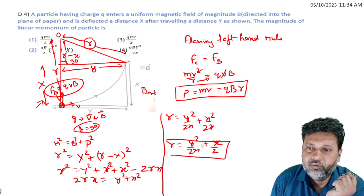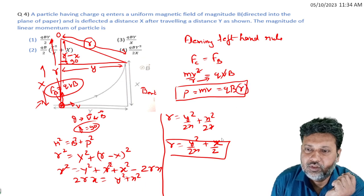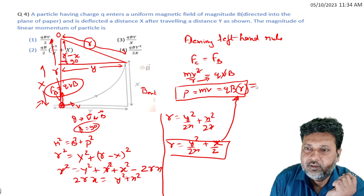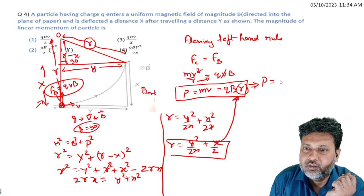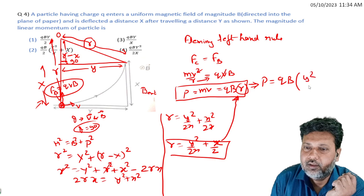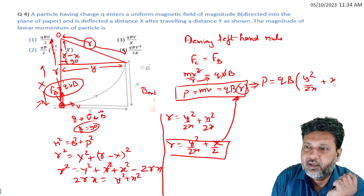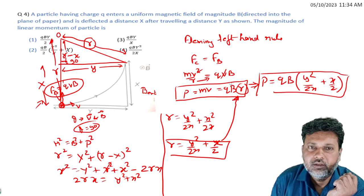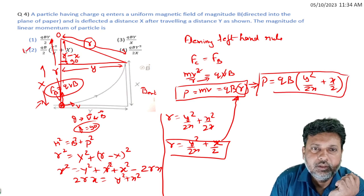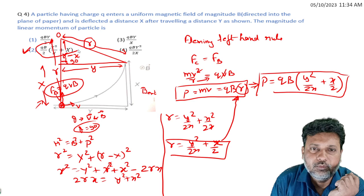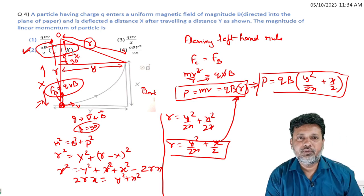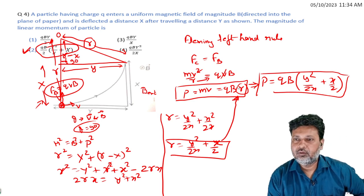Since momentum p equals qBr, substituting the value of r: p equals qB into (y² upon 2x plus x upon 2). This gives us the linear momentum value.